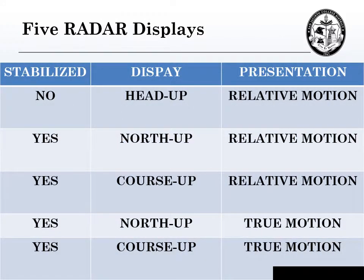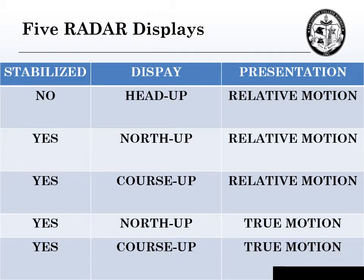The five radar displays. We only have one unstabilized radar, and that's the unstabilized head-up relative motion radar. The rest are stabilized, meaning they have a gyro. We have two stabilized relative motion radars — a north-up and a course-up. We also have two stabilized true motion radars, which will also be north-up and course-up.